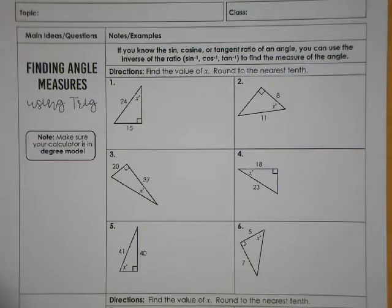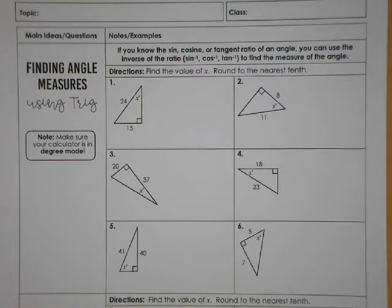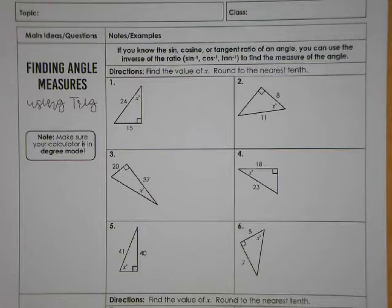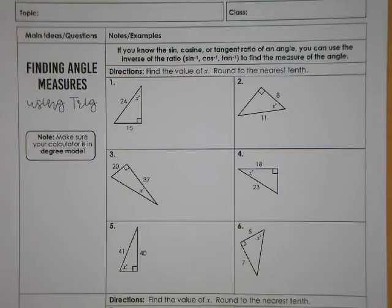Welcome to my second of three videos dealing with trigonometry with right triangles for things you would typically see in a high school geometry course. The first video introduced how we find the ratio of sine, cosine, or tangent based on where the angle is located in the triangle, and then we practiced how to identify which ratio to use and do basic algebra to solve for the length of the missing side of a right triangle.